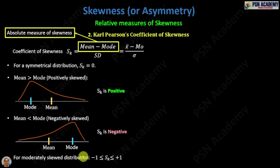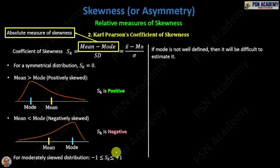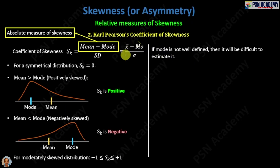For a moderately skewed distribution, S_k will lie between minus one and plus one. Now the problem is that sometimes the mode is not well defined, and if it is not well defined then it will be very difficult to estimate it, and this formula depends upon mode.